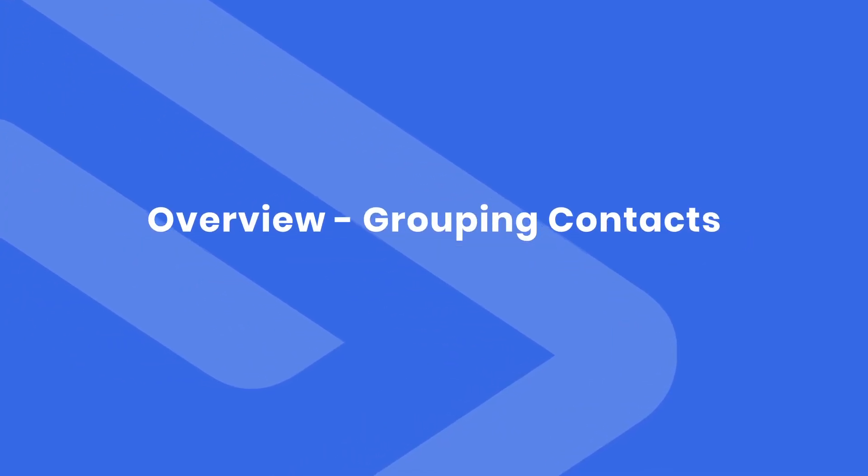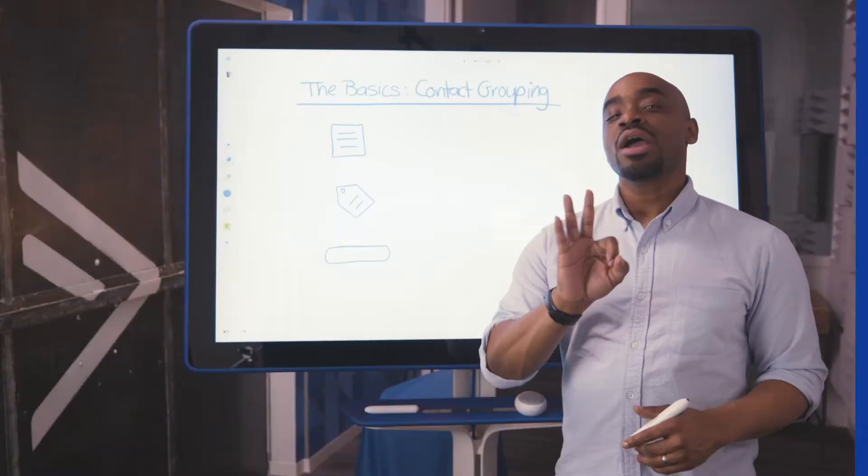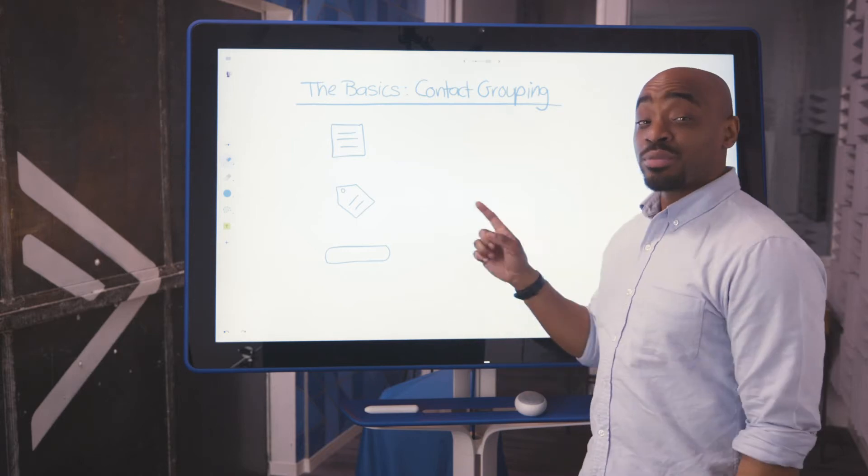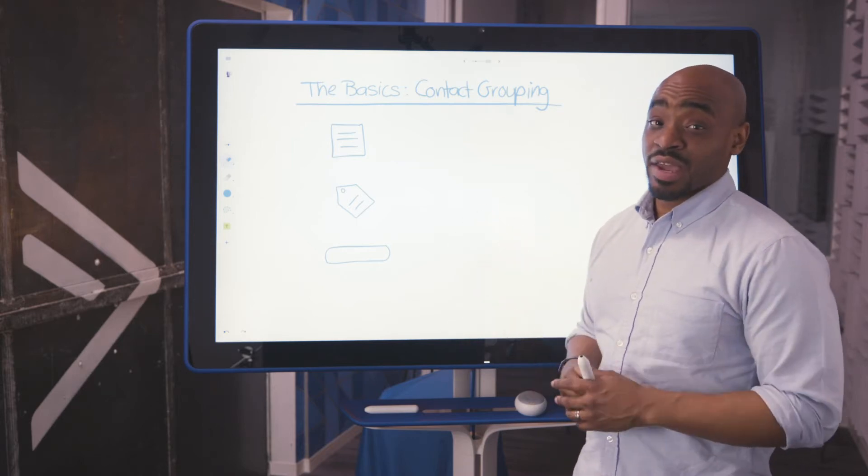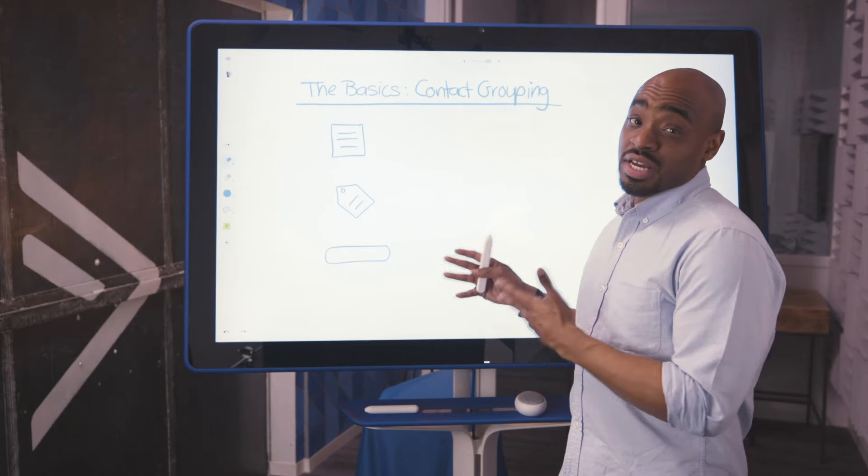With your contacts now in your account and a way to capture future contacts, let's go over how to group them. There are three primary ways that you're able to group your contacts in ActiveCampaign, and that's what we want to discuss here.